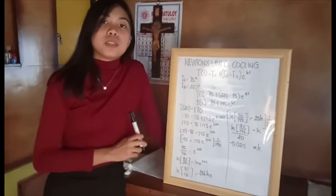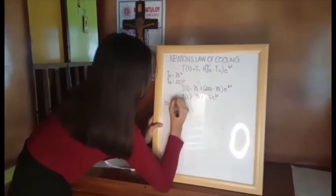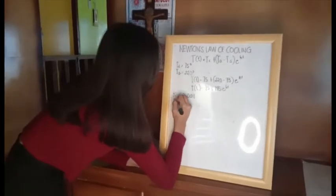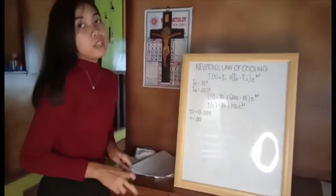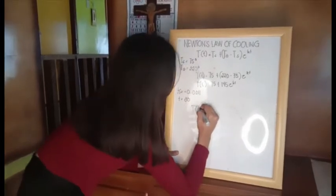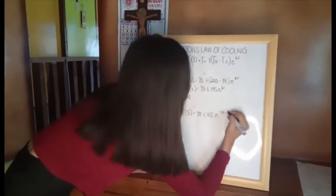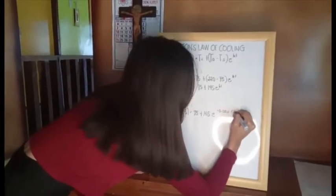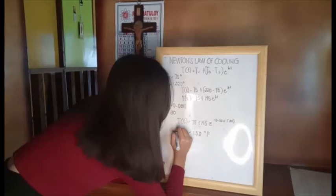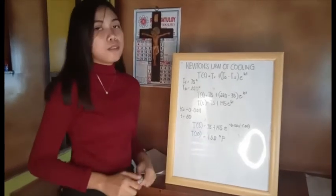Now that we have the value of K, which is approximately negative 0.0211, we can solve the temperature of the soup at 30 minutes. Our T will be 30, so we substitute into the equation T(t) = 75 + 145·E^(−0.0211t). We get approximately 152 degrees Fahrenheit at T equals 30. So the temperature of the soup after 30 minutes will be 152 degrees Fahrenheit.